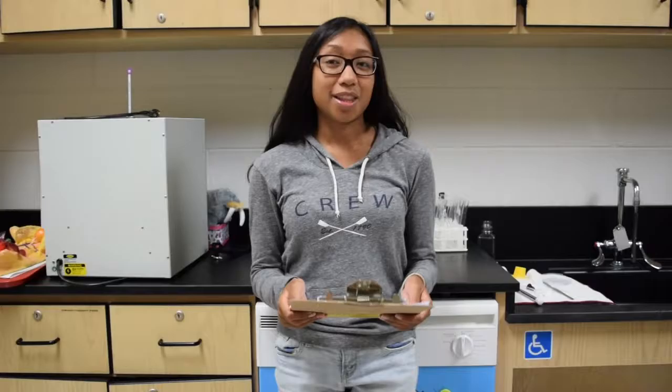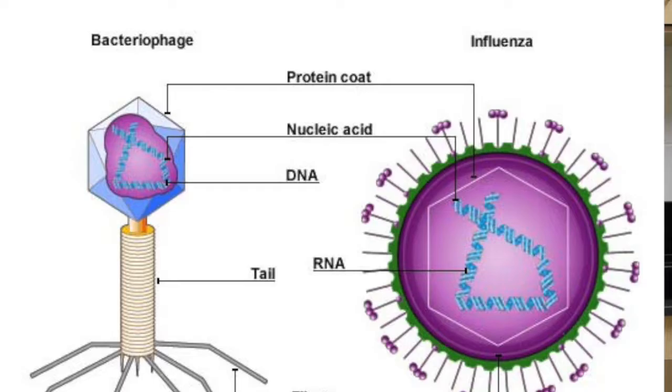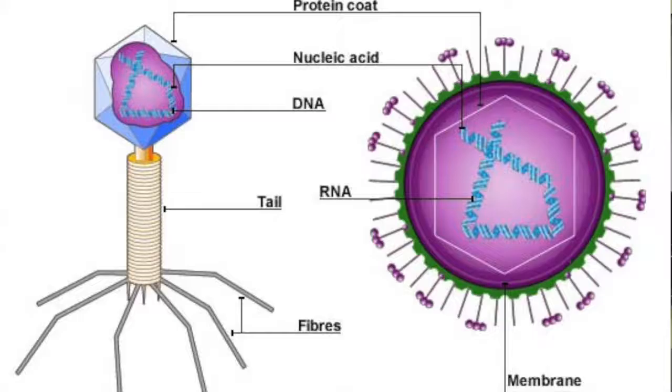Usually when thinking of a virus, you think of a sickness going around. But the scientific way to describe a virus is a microscopic organism containing genetic material. The parts of a virus are the capsid, which is a protein, the genetic material — either DNA or RNA — and the envelope, which is a lipid. These nonliving things depend on other cells in order to survive.